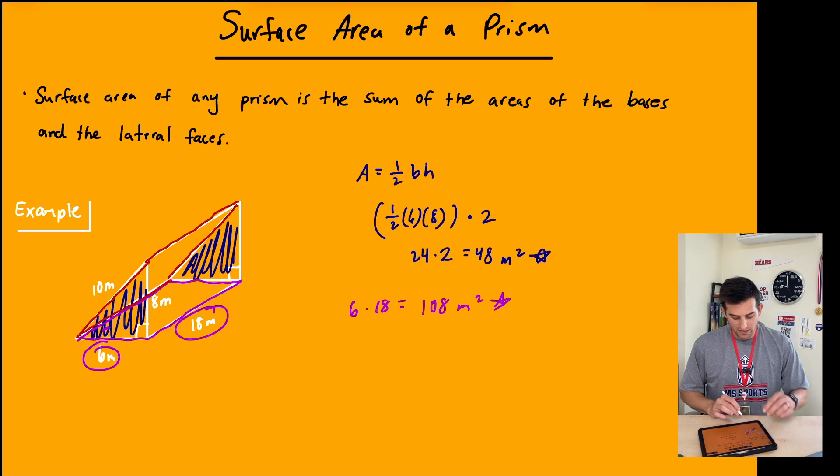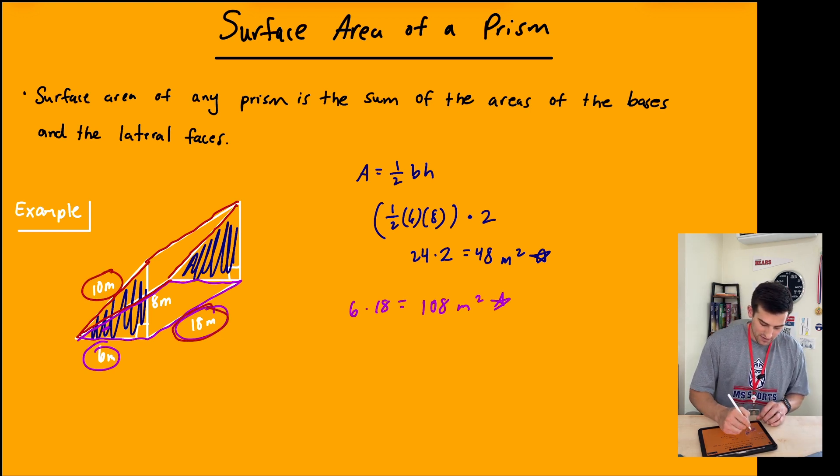We see that's going to be 10 times 18, because this side over here would also be 18. So 10 times 18 is 180 square meters.